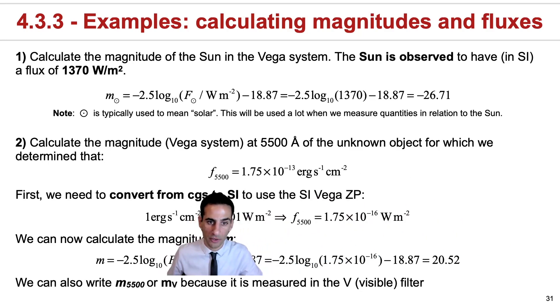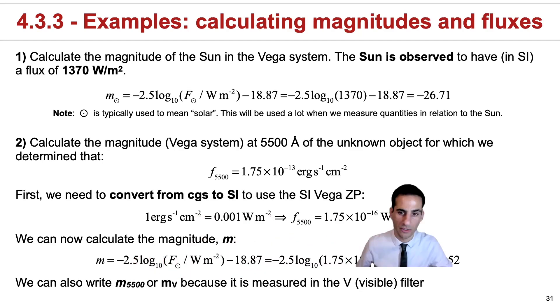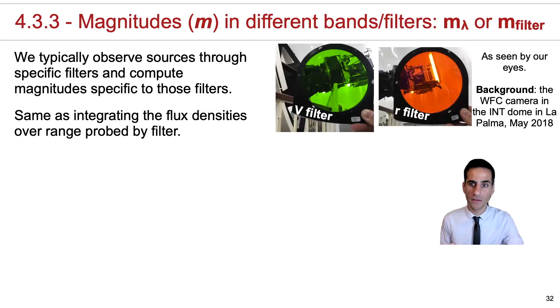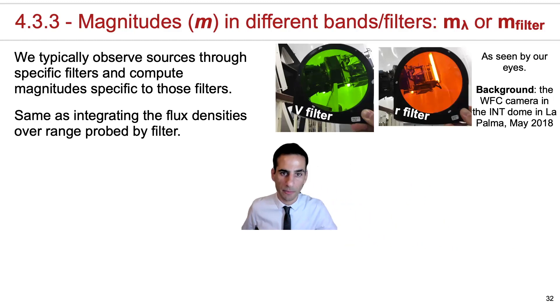Actually, the more proper way of writing that magnitude is not simply as an m, but it's with m with something like a V, because that corresponds to the V magnitude, or with a wavelength that we're calibrating into. We'll get to see more examples of this as we go along. Now, the reason why I've mentioned that the proper way would be to use an m with a subscript of V is because that would be the magnitude of a star observed through that filter.